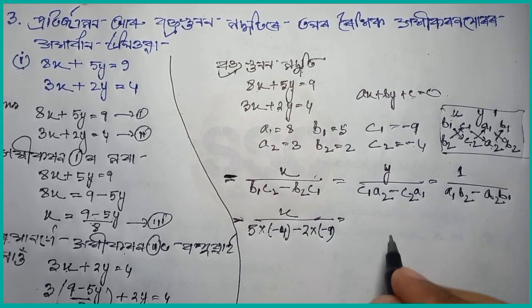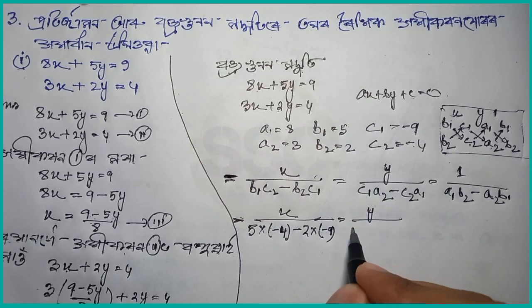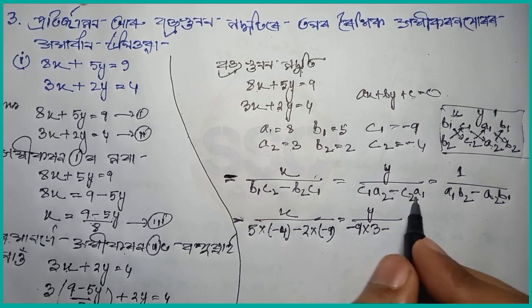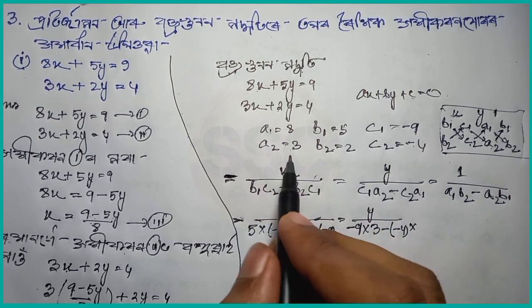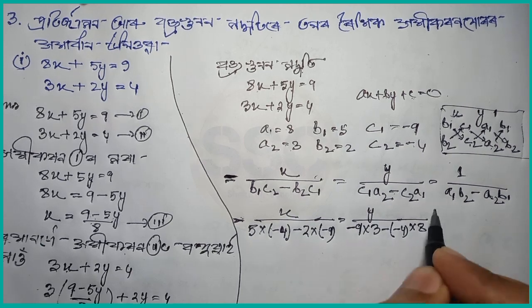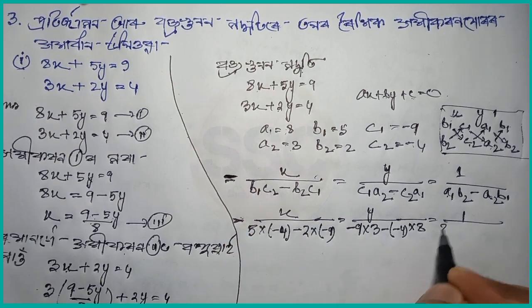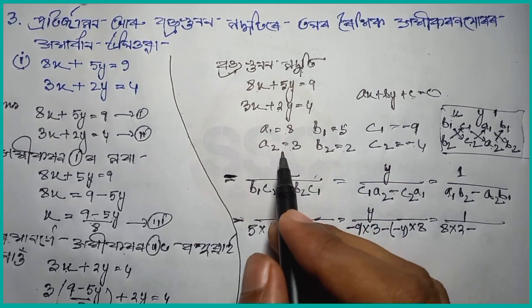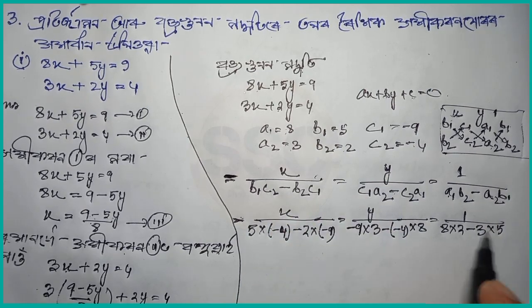Then equal. For Y above: c1 equals minus 9, a2 equals 3. Minus c2 equals minus 4, a1 equals 8. Then equals 1. Above is a1 equals 8, then b2 equals 2. Minus: a2 equals 3, b1 equals 5. Now the cross-multiplication is done. We will now solve this. X is above with x squared. Now solving: for X we have 5 times minus 4, and for Y we have plus 32 minus 27, which gives 5. For the denominator: plus 16 minus 15, which gives 1.